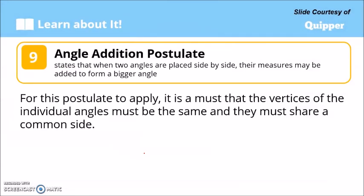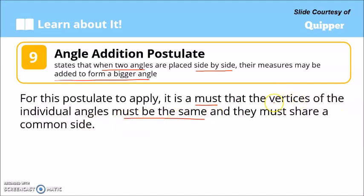Now let's talk about the angle addition postulate. It states that when two angles are placed side by side with a common side, their measures may be added to form a bigger angle. For this postulate to apply, the vertices of the individual angles must be the same and they must share a common side.